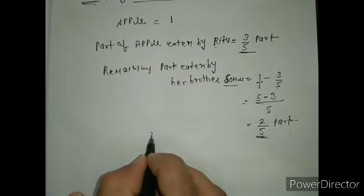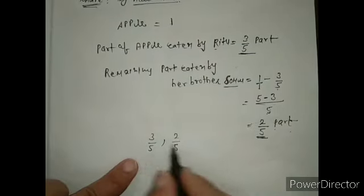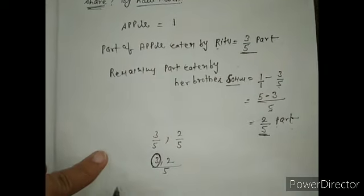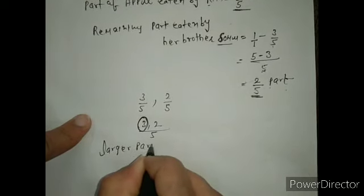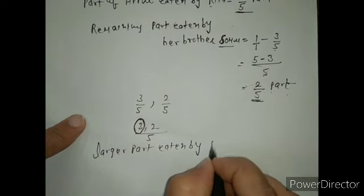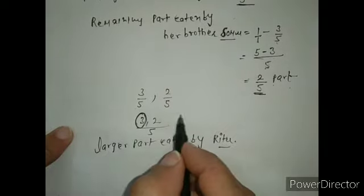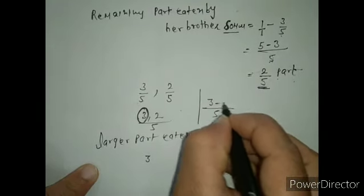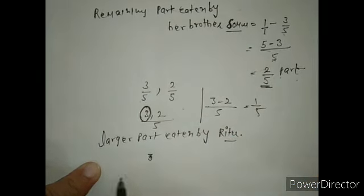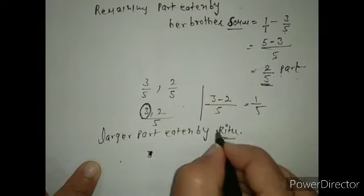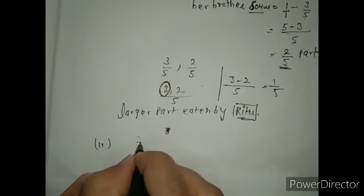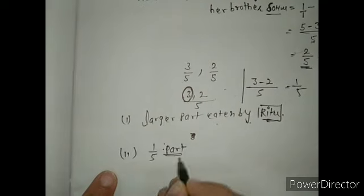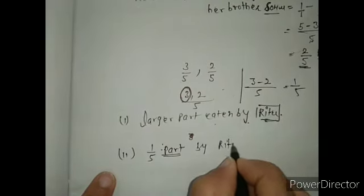Now who ate the larger share? We compare 3/5 and 2/5. Since the denominator 5 is the same, we compare the numerators: 3 and 2. The larger part was eaten by Ritu. By how much? Subtract: 3/5 minus 2/5 equals 1/5. So the first answer is Ritu ate more, and the second answer is Ritu ate 1/5 part more than Somu because she had taken the larger share.